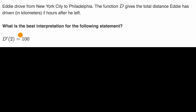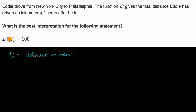All right, now let's do this together. If d is equal to the distance driven, then to get d prime, you're taking the derivative with respect to time. So one way to think about it is, it is the rate of change of d.